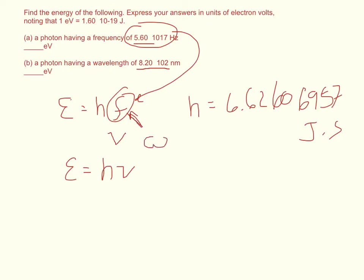And in that case we would have to use energy equals some kind of modification of Planck's constant times omega. And that modification of Planck's constant is called h-bar, which is basically h-bar equals Planck's constant divided by 2 pi.